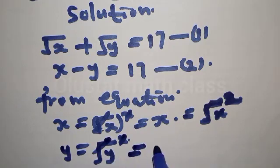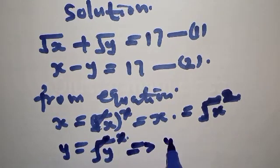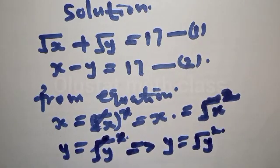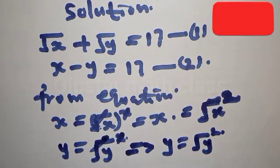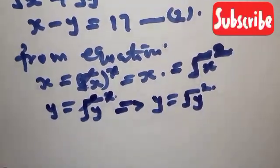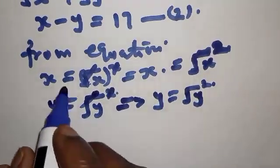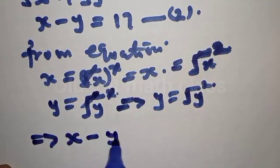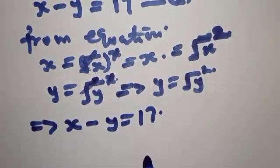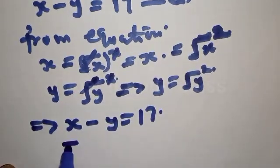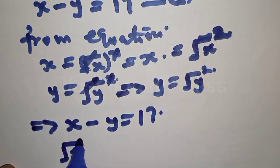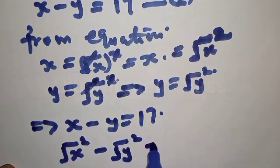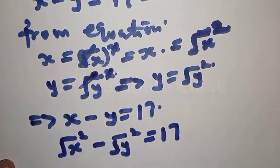This implies that y equals the square root of y squared. Now let's substitute. From equation 2, x minus y equals 17, which can be rewritten as the square root of x squared minus the square root of y squared equals 17.